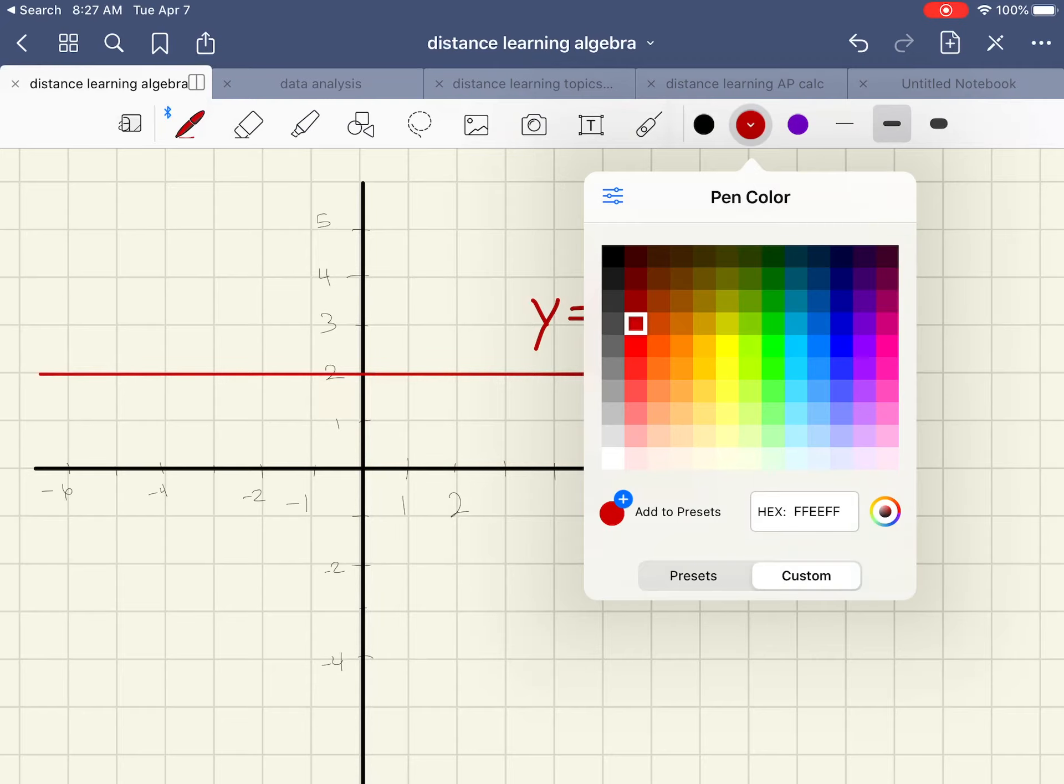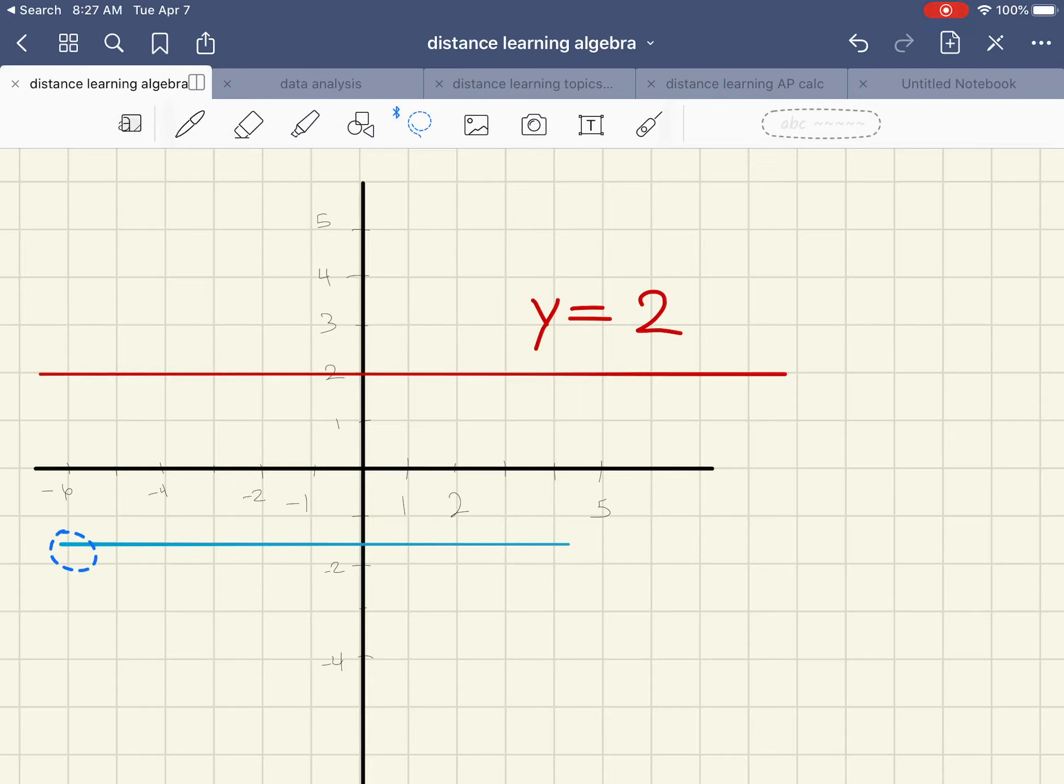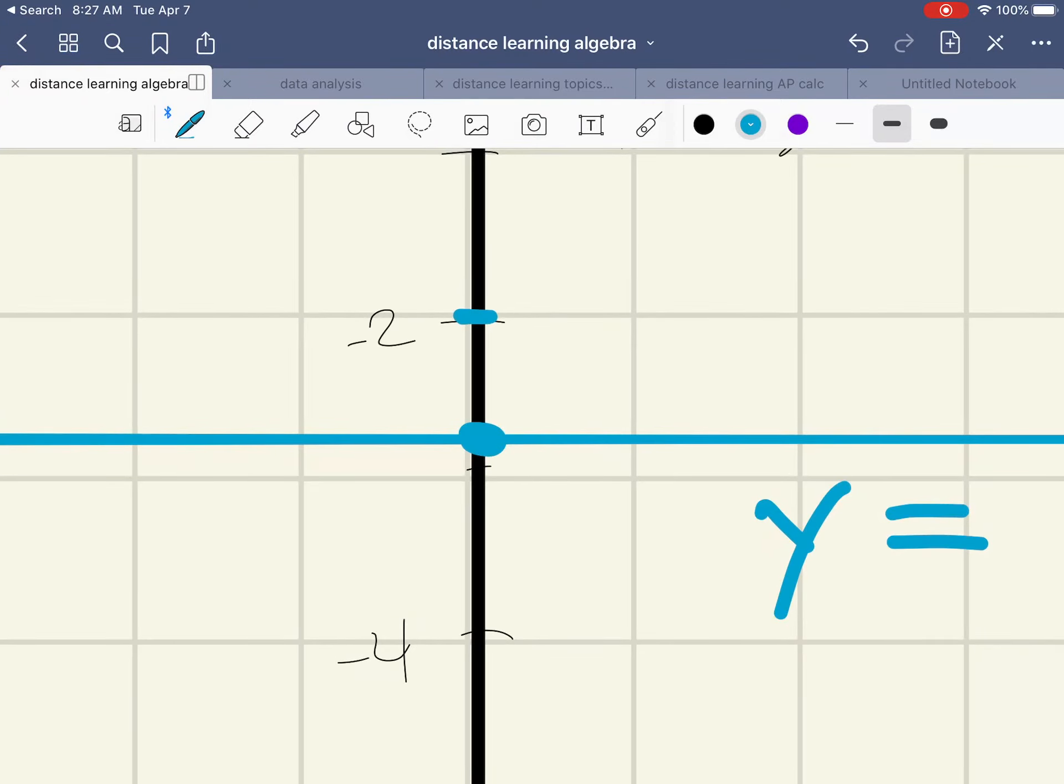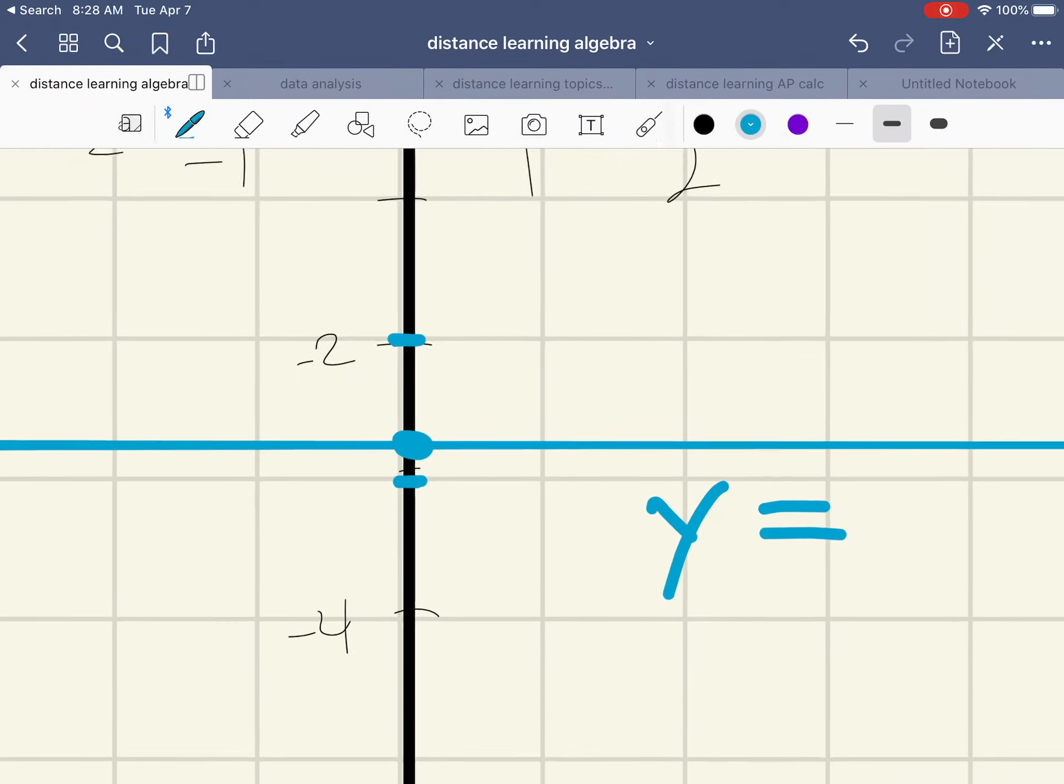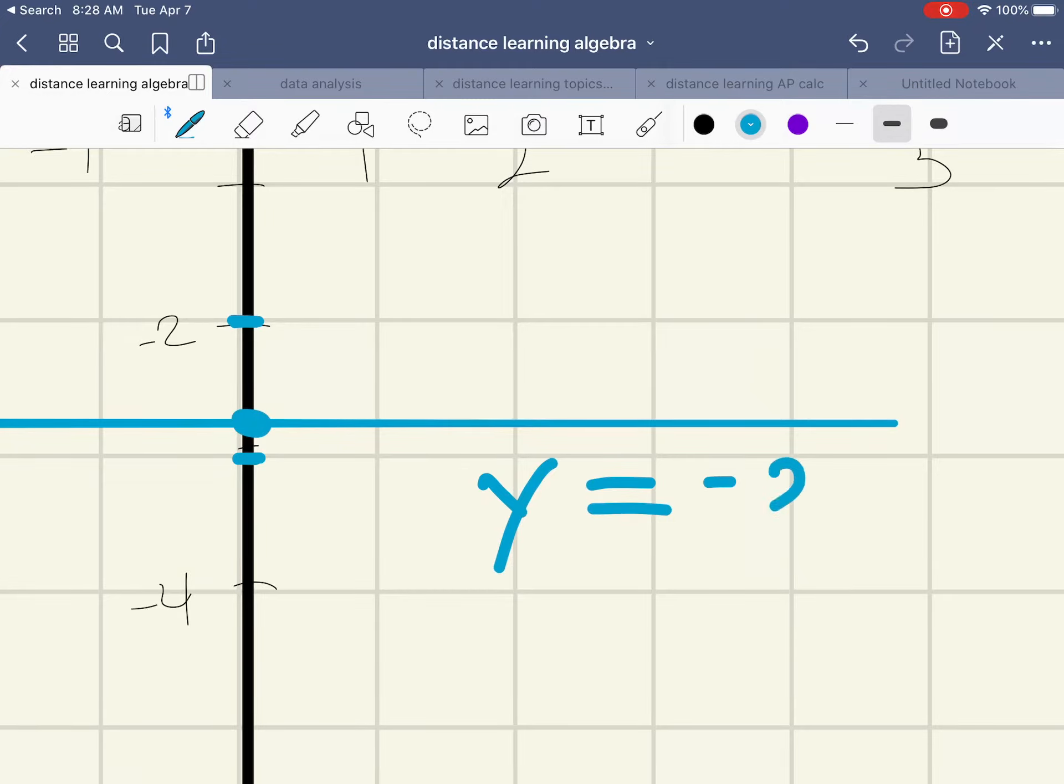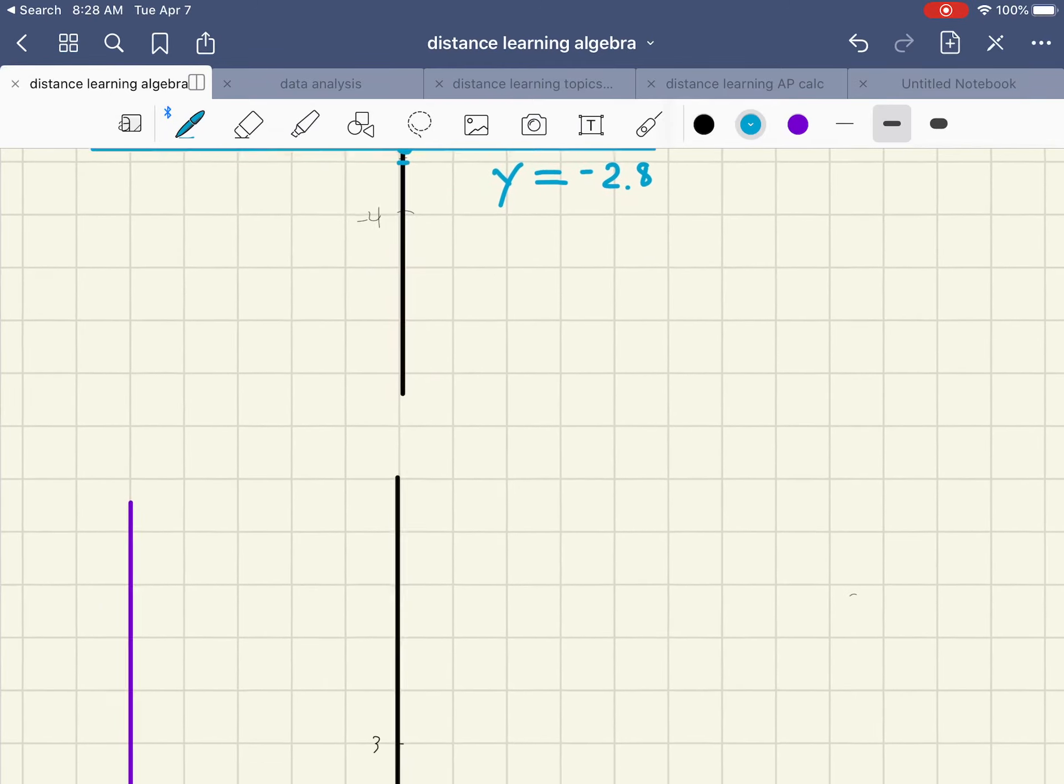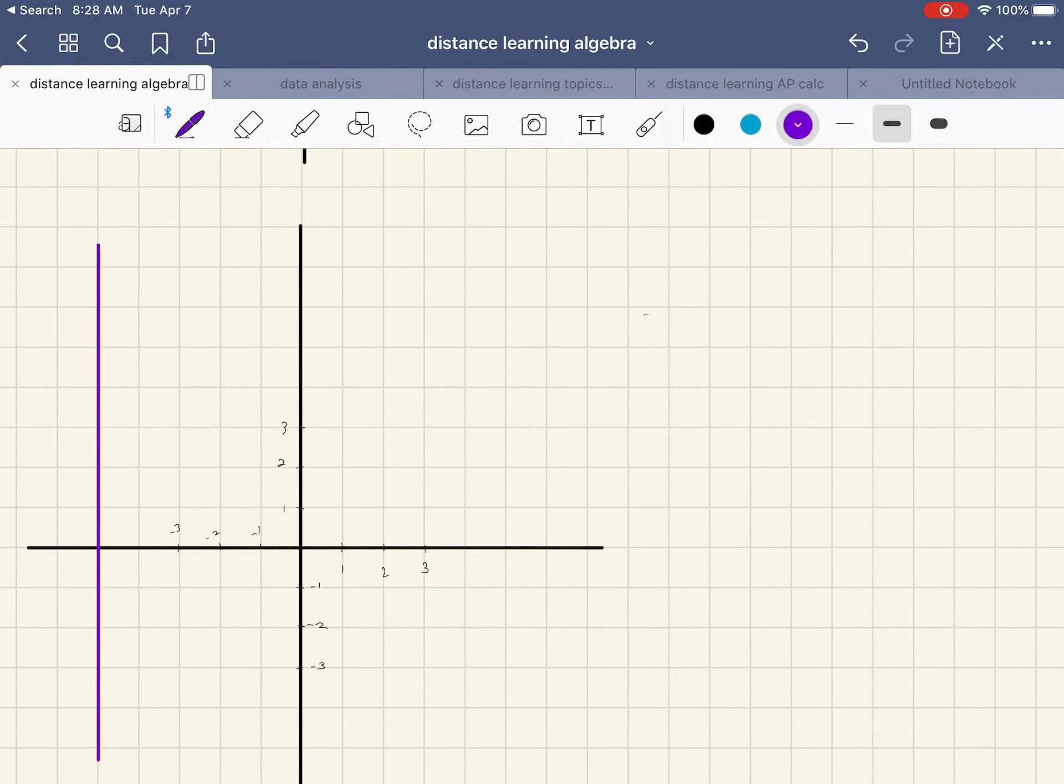If I were to draw a second line here, let's say it's right around there. I definitely want to say y equals, and I look to see what that number is. So here's negative two, here's negative three, it's probably like negative 2.8. And that's it, that's all you have to do for a horizontal line.